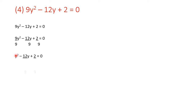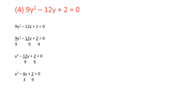So what we get in the next step: we get y squared. 9 by 9 gives y squared, and 12 by 9 gives 12 upon 9 y, and plus 2 upon 9. This can be further simplified and written as y squared minus 4 upon 3 y plus 2 upon 9. If you can see, 3 threes are 9 and 3 fours are 12. This equation is now in the form of ax squared plus bx plus c with a equal to 1.